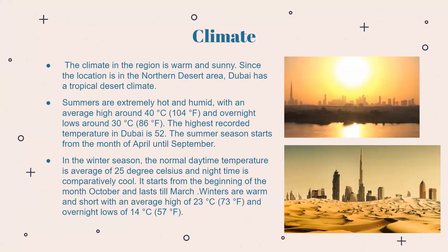In the winter season, the normal daytime temperature averages 25 degrees Celsius, and nighttime is comparatively cool. Winter starts from the beginning of October. Winters are warm and short, with an average high of 23 degrees Celsius (72–73°F), and during the night it drops to 14 degrees Celsius (57°F).